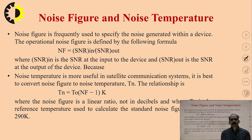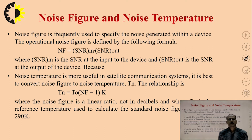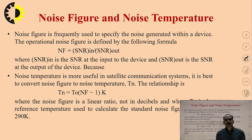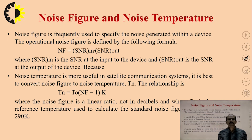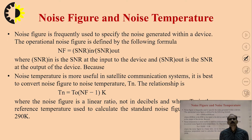In that series, first of all we derived the satellite link equation. After that we discussed the satellite system temperature and satellite noise temperature. As per the definition of noise, any unwanted signal which creates any type of disturbance in normal communication is known as noise. There are various kinds of noise such as external noise and internal noise. One of them is thermal noise, which comes into the picture due to the resistive components of the system.